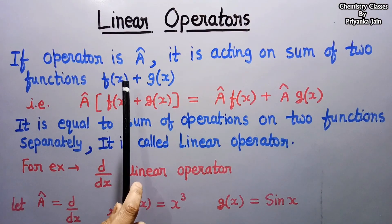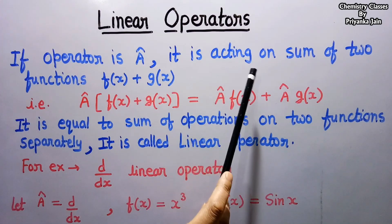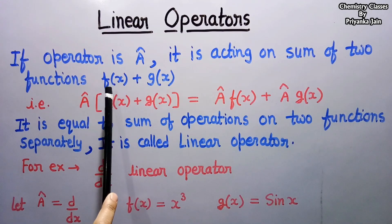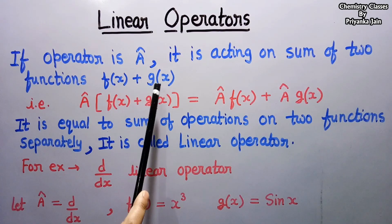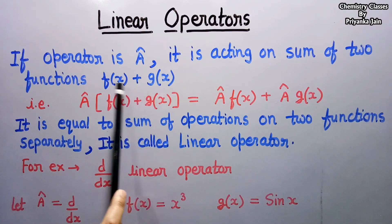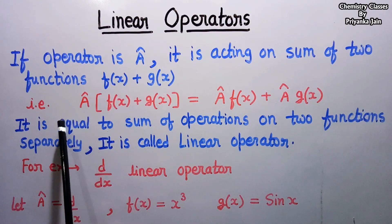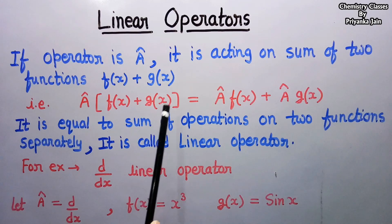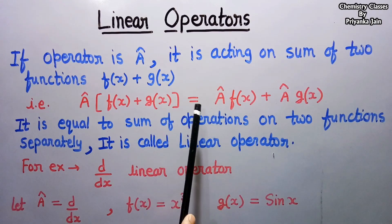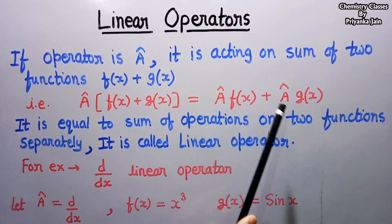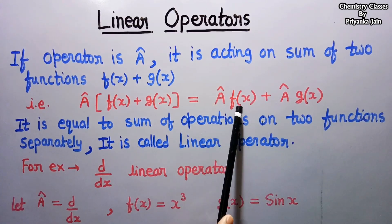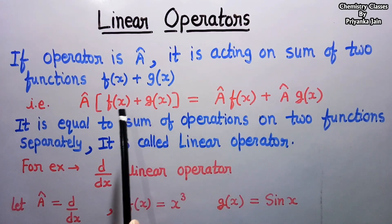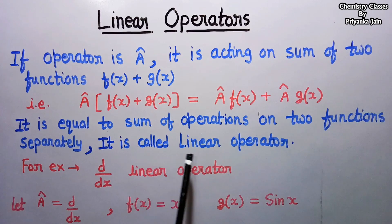Now we see the linear operator. If A is an operator acting on the sum of two functions f(x) and g(x), and the condition is that A[f(x) + g(x)] = A·f(x) + A·g(x) — meaning operating on the sum equals the sum of the operator acting on each function separately — then the operator is known as a linear operator.